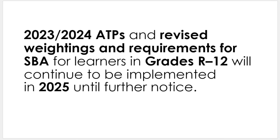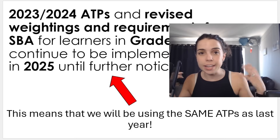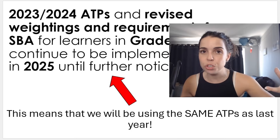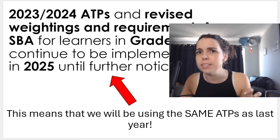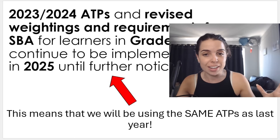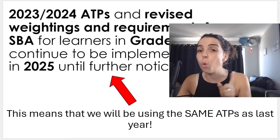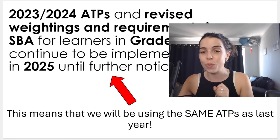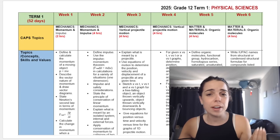Until further notice, we will be using the same ATPs as last year. So if your teacher is using an ATP, or you're googling 'accounting ATP,' 'business ATP,' 'maths ATP,' or whatever it is, and you can't find a 2025 one — that's okay. We are using the exact same one from 2023–2024 until we are told otherwise, and you'll be the first to hear it from me when I hear it.